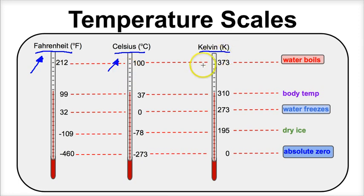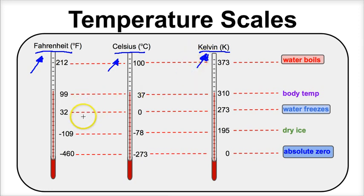Last but not least, we've got the Kelvin scale. The Kelvin scale is primarily used in the sciences and engineering disciplines. For example, in chemistry, we're going to be using the Kelvin scale in our calculations. So let's take a look at several important temperatures on each one of these scales.